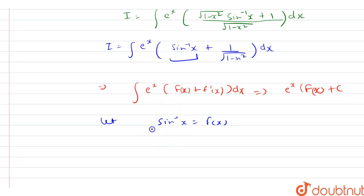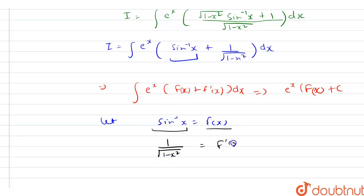The differentiation of sine inverse x is 1 by under root of 1 minus x squared, and this is equal to the differentiation of f(x), that is f dash x. So here we have f(x) as sine inverse x and f dash x as 1 by under root of 1 minus x squared.